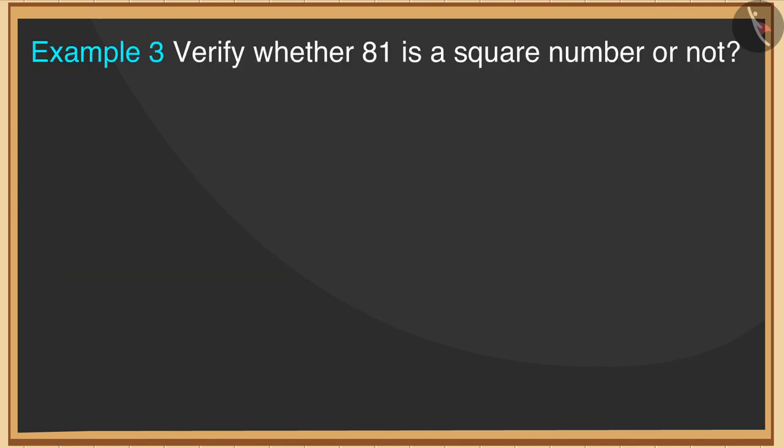Here, if I ask whether 81 is a square number or not, how will you verify? Yes, we can write every square number as a sum of consecutive odd numbers starting from 1.